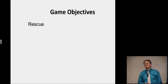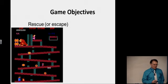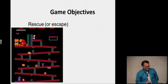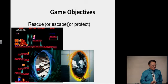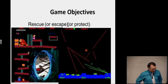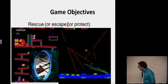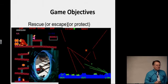The rescue or escape game: Donkey Kong is an example of a rescue objective, where you overcome obstacles to rescue someone. Portal is an example of an escape game, where you're trying to escape from nefarious traps. Protect is also a version of this — Missile Command from the 1980s, where you had cities being constantly bombarded by nuclear weapons and your job was to shoot down as many as you could and protect your assets.